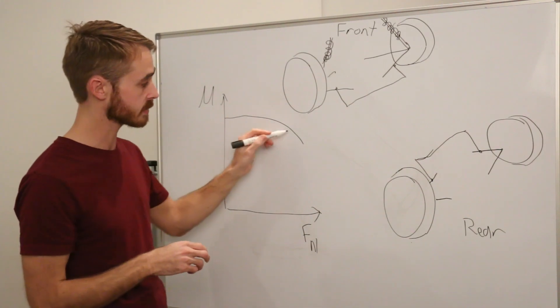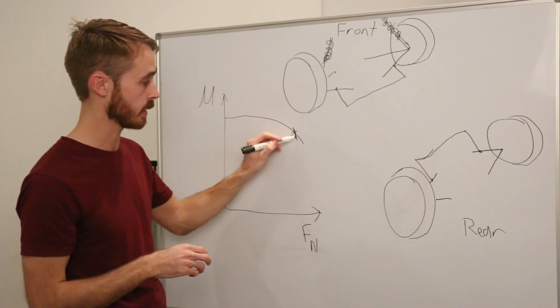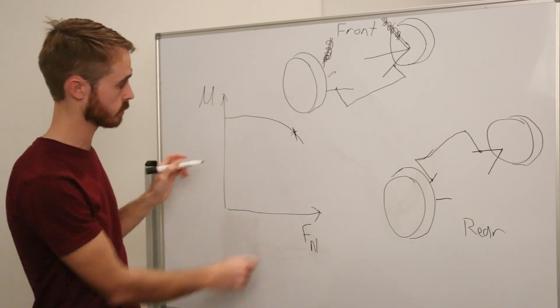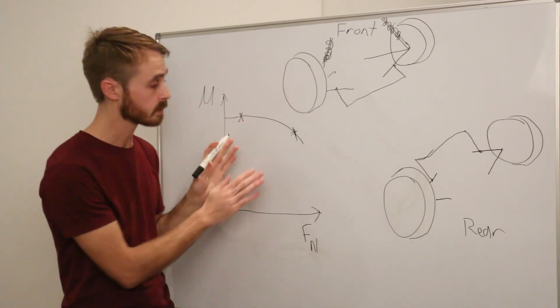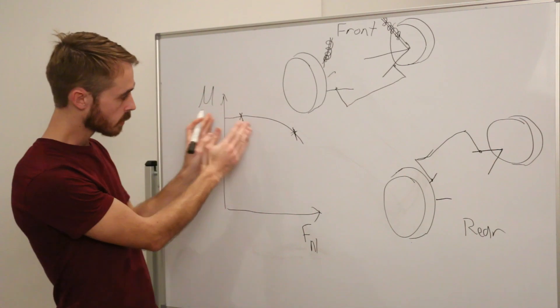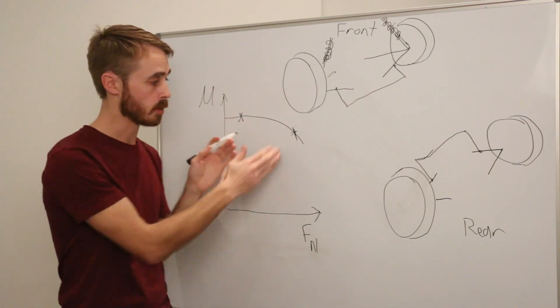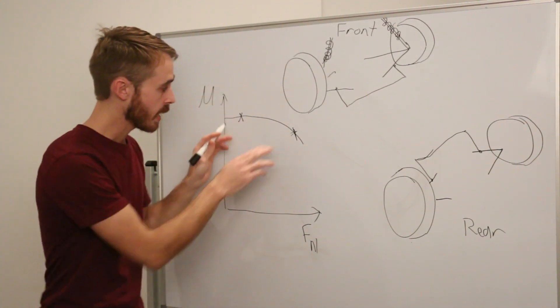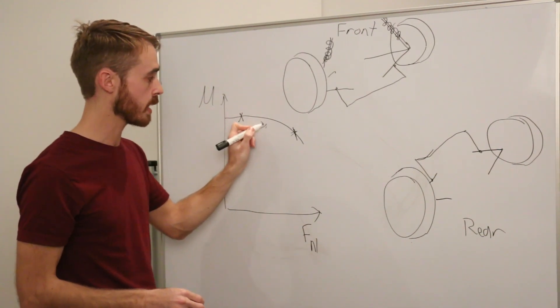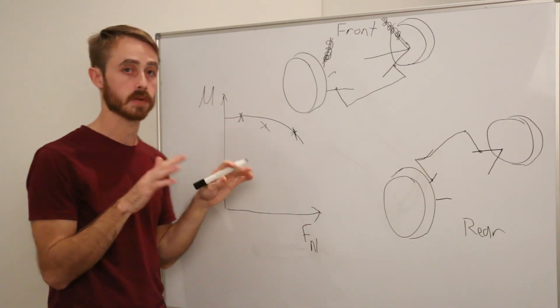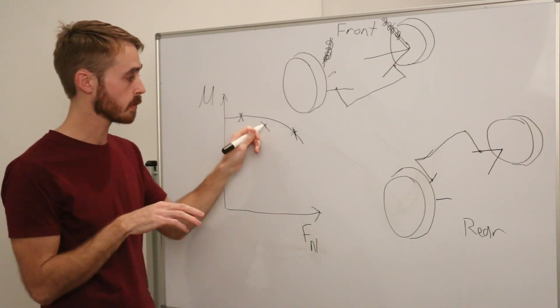So it means that your outside tyres are going to be operating around here where this is the coefficient of friction and this is the normal force, and the inside tyres are going to be over here. So we can see that those inside ones are in a good spot but the outside ones not so much, and if we were to average these two points we can see that you're going to end up with an effective coefficient of friction for the whole car of somewhere around here.